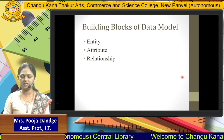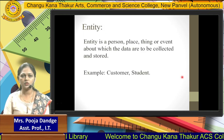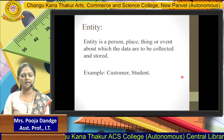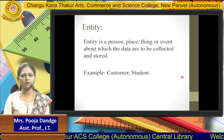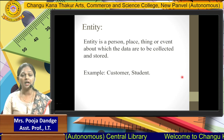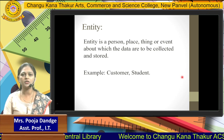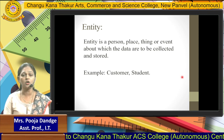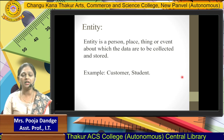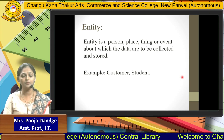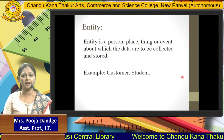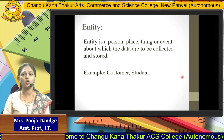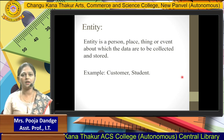An entity is a person, place, thing, or event about which data will be collected and stored. For example, a student is one type of entity, and inside that student entity we store all student records — for example, student name, student ID, student class, student division. Another example is customer: customer ID, customer name, customer address, customer contact number — all this information is collected and stored in a customer entity.